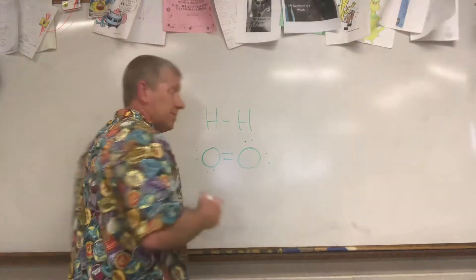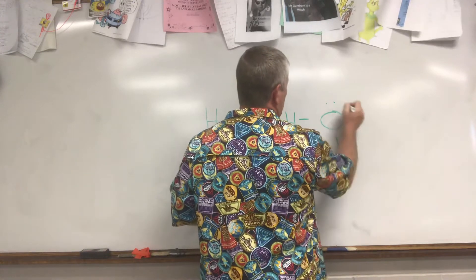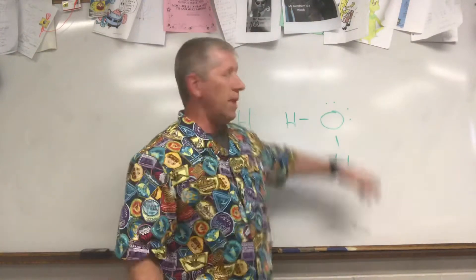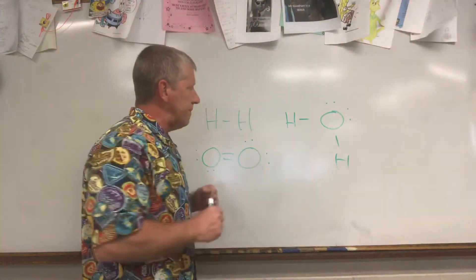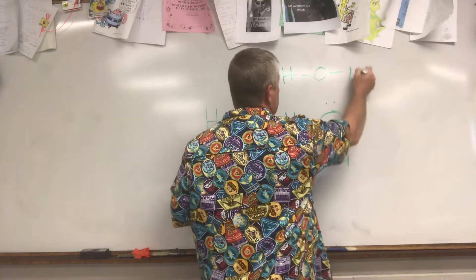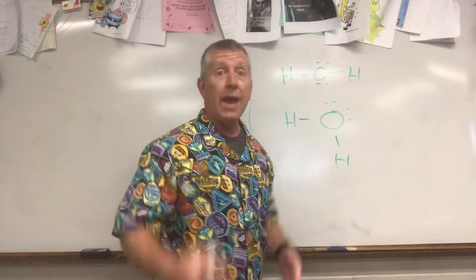Another example would be water — this is actually one on your list, so I'm helping you out a little by doing this Lewis structure. Water is the next one down. The Lewis structure for water has an oxygen in the middle connected to two hydrogens, with two unshared pairs of electrons. That's a complete Lewis structure. If you don't give me the unshared pairs of electrons you'll lose a point, so don't lose a point — if there are unshared pairs, sprinkle them around, like sprinkles on your ice cream.